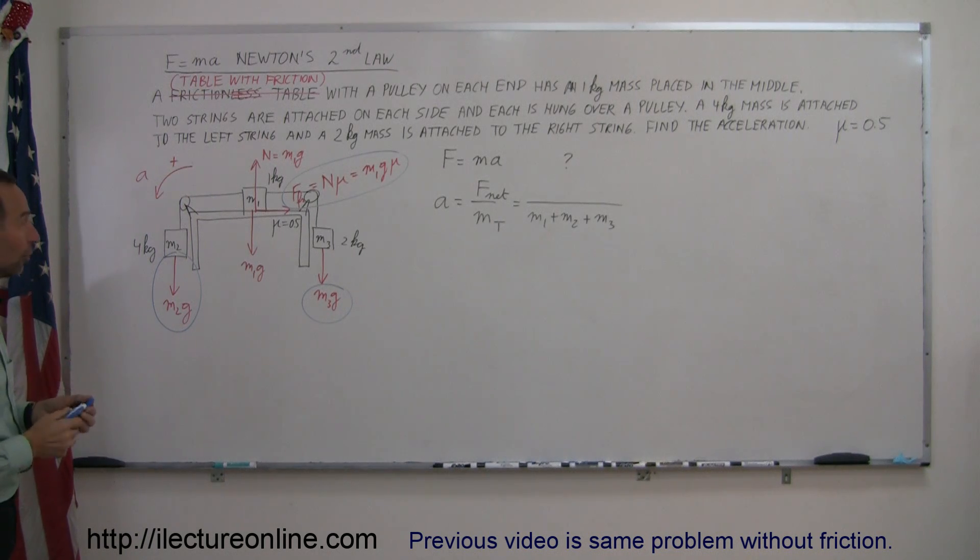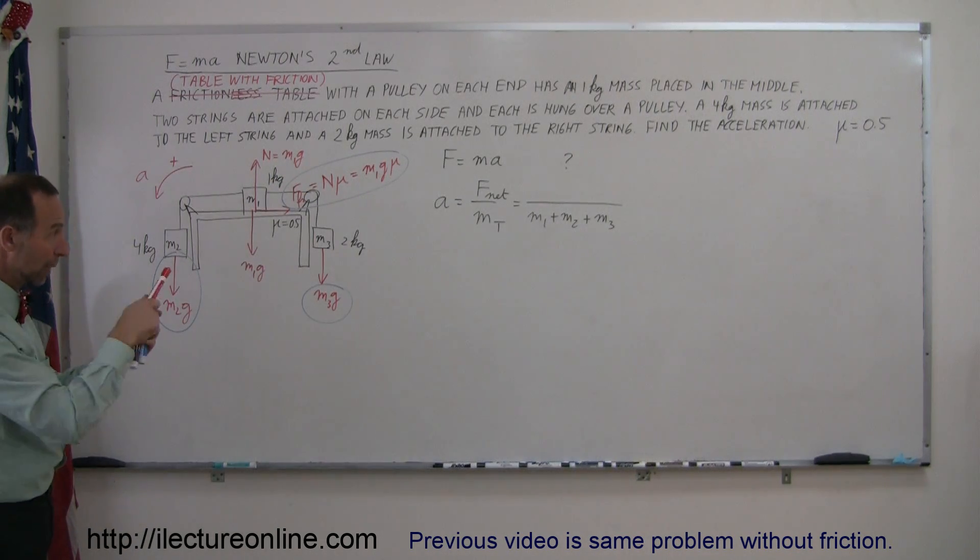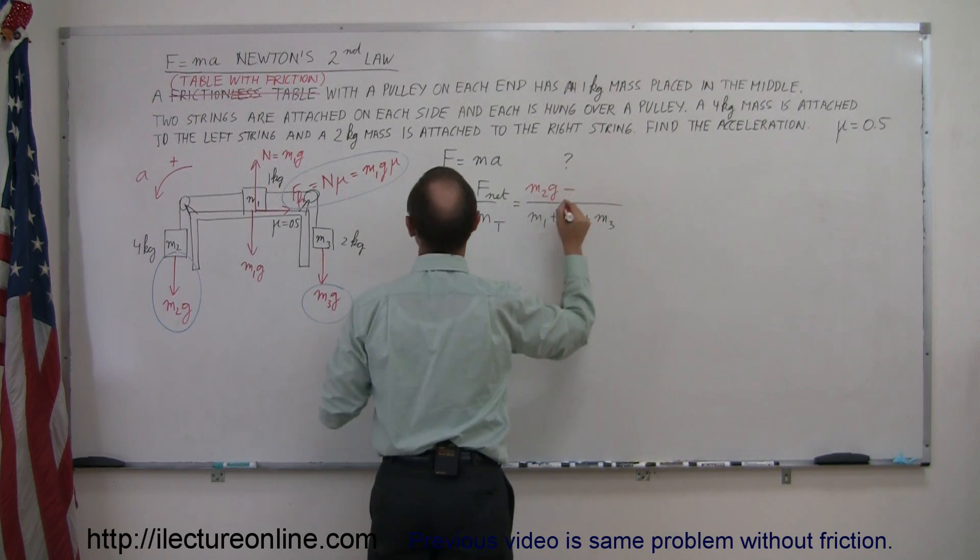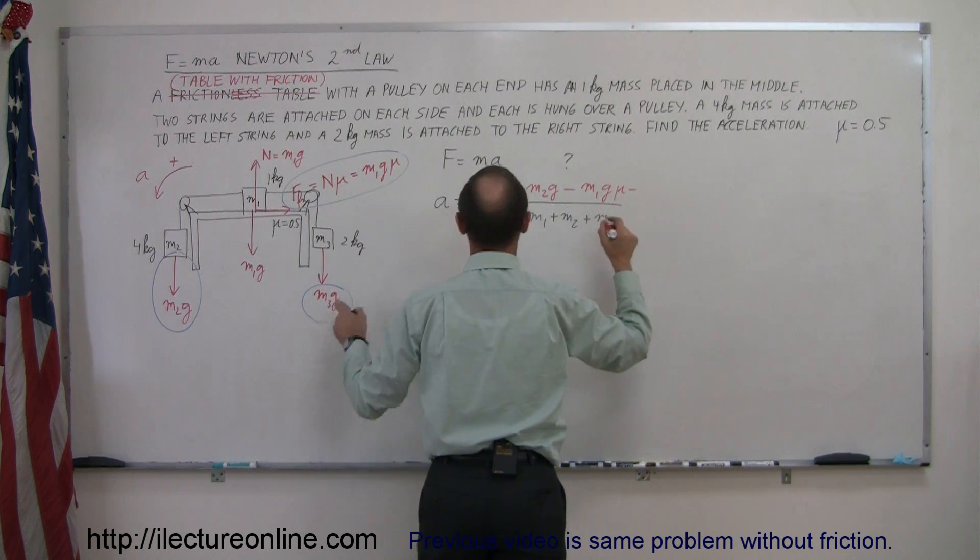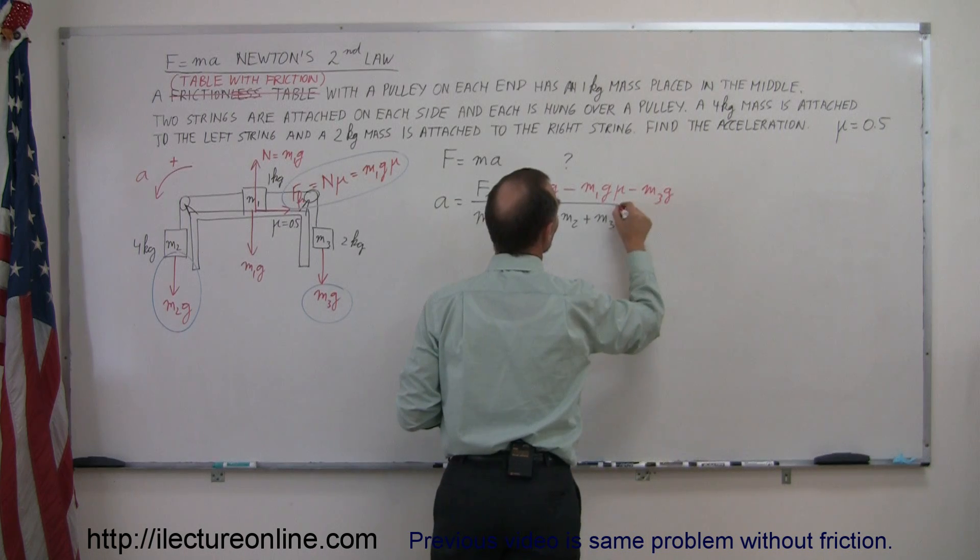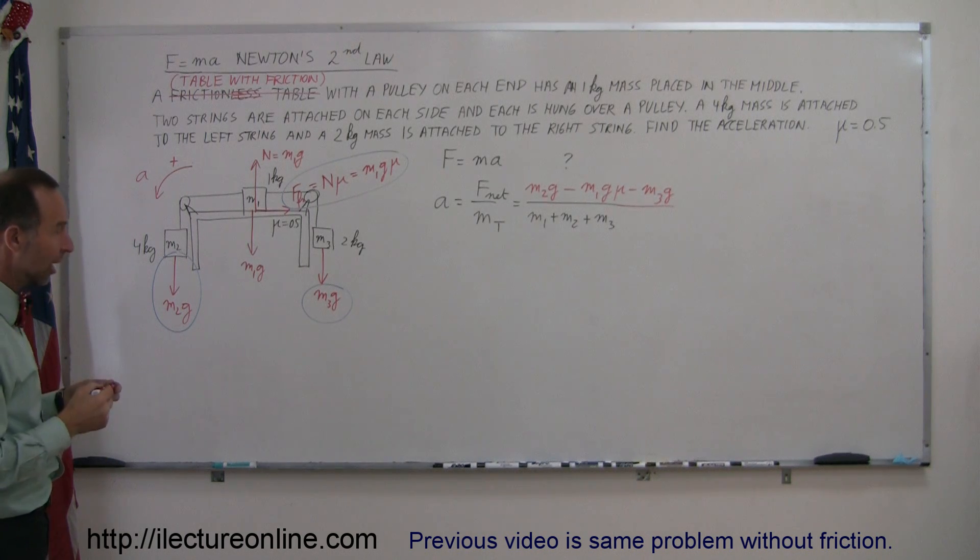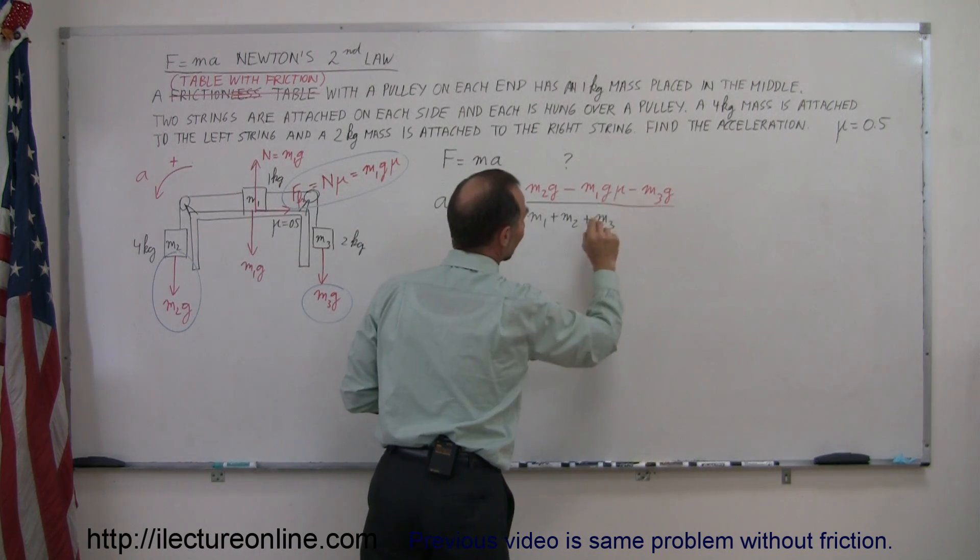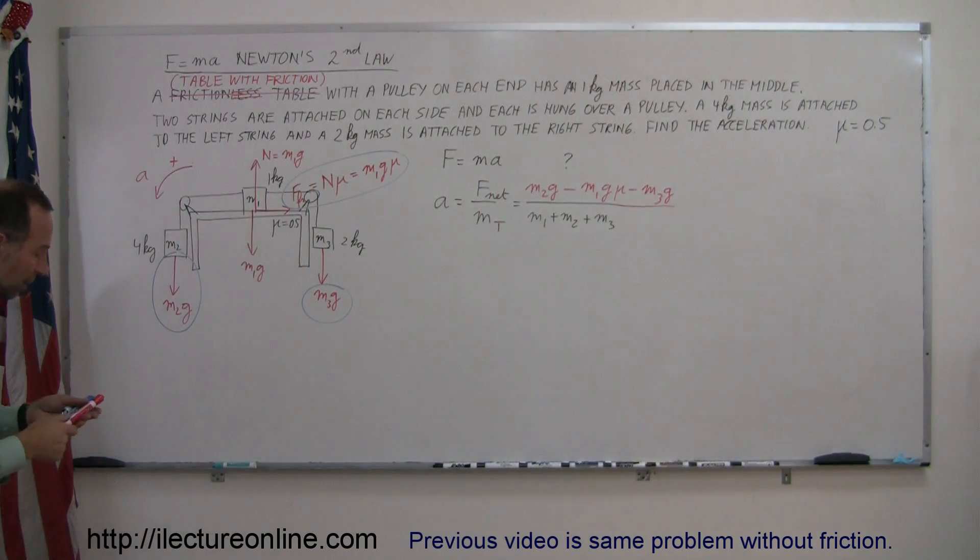Therefore, the net force will be this force minus the other two that oppose it. That becomes M2g, which aids acceleration, minus the friction force M1gμ, and minus M3g. That becomes the equation derived from Newton's second law to solve for the acceleration of the system. The difference is we now have a third force, the friction force, that also opposes acceleration.